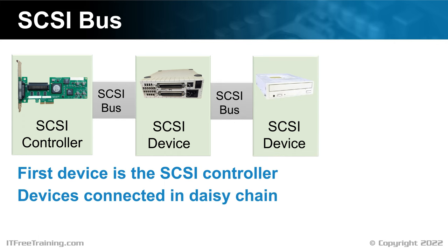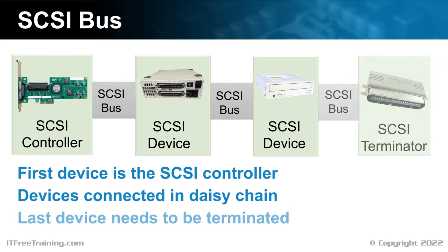A lot of external SCSI devices will have two plugs in them — one plug is for the previous device or a controller, and the second to connect to the next device. At the end of the SCSI bus, there needs to be a terminator. Either a terminator needs to be plugged into the device, or the device itself has to be self-terminated. When the signal travels down the SCSI cable without the terminator at the end, the signal will be reflected back down the cable. Both ends of the cable need to be terminated, so the SCSI controller itself will have a terminator built in. If a terminator is missing or damaged on either end of the cable, the bus will not work.